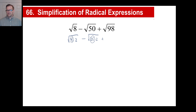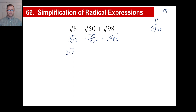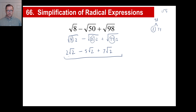Wait a minute — 49 is a perfect square. So if you look at this now, it looks nice and neat. You can take the square root of 4 on the outside: 2, square root of 2. Square root of 25 is 5, square root of 2. Square root of 49 is 7, square root of 2. Now those are all square root of 2, so they're like terms — shove them all together. So 2 minus 5 is negative 3, negative 3 plus 7 is 4. There's my final answer: 4 square root of 2.